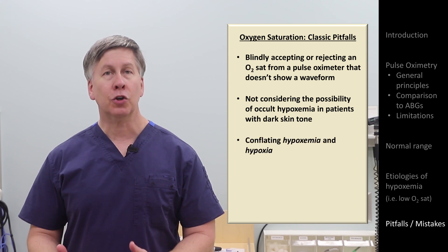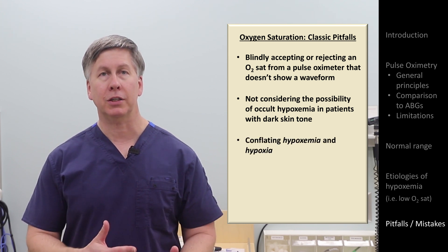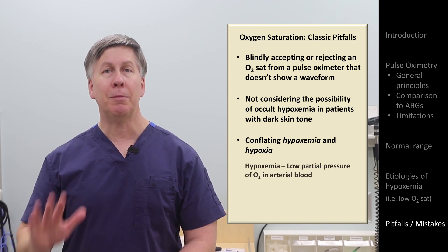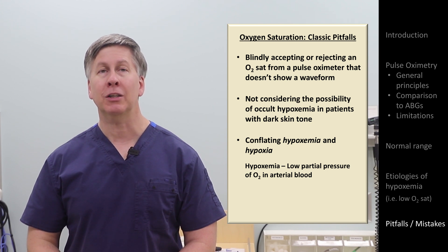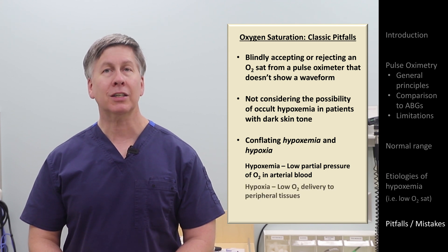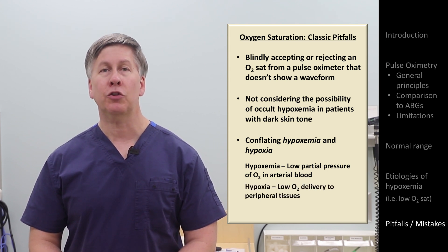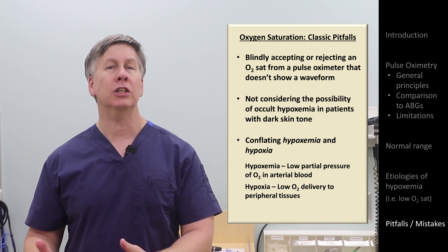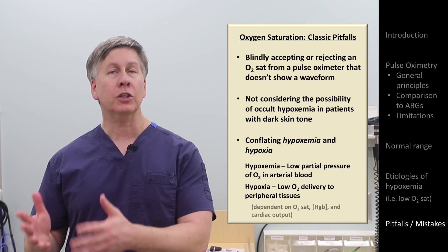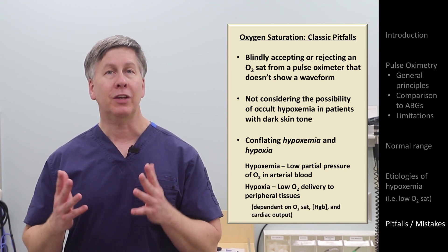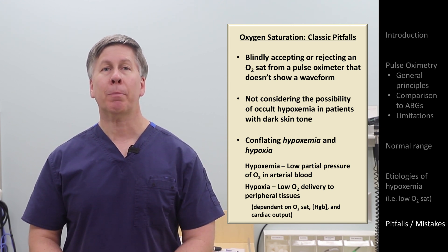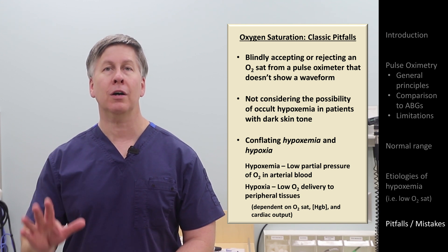And last, conflating the terms hypoxemia and hypoxia. You will often hear these used as synonyms, but they are not. Hypoxemia is a state when the partial pressure of oxygen in the blood is low, which almost always goes together with a low O2 sat. Whereas hypoxia refers to a state of low oxygen delivery to the peripheral tissues, or low utilization by those tissues. Overall, oxygen delivery to the body is dependent not just on the oxygen saturation, but also on the concentration of hemoglobin and on the cardiac output — but pulse oximetry is just an approximate measure of the first one of those three factors.